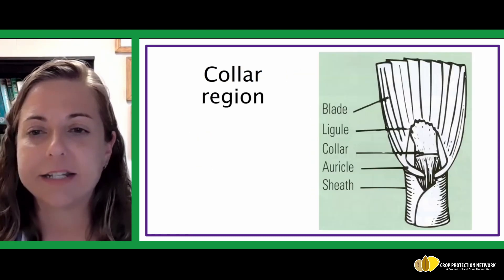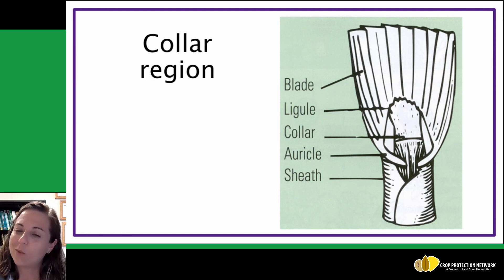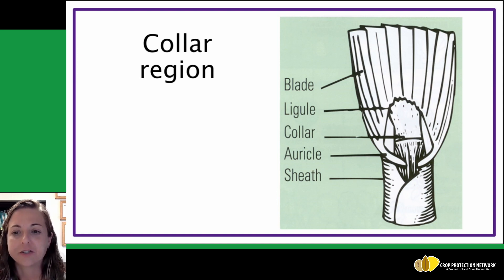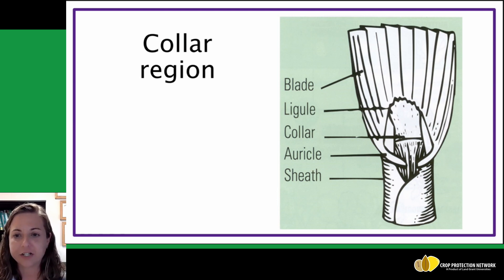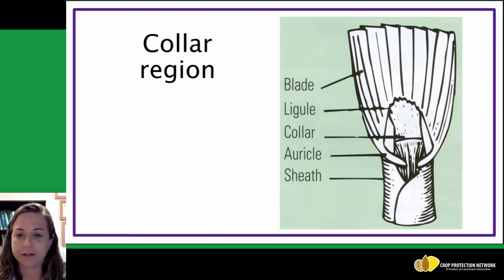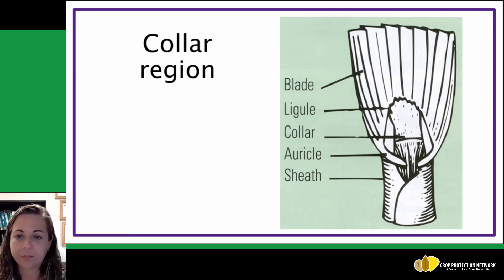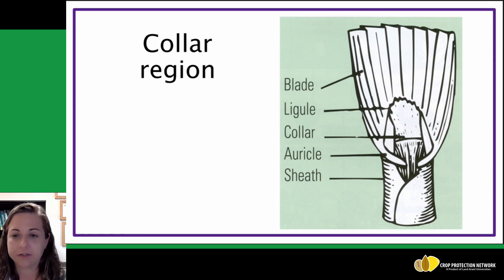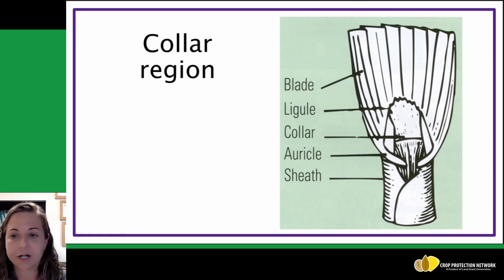Getting down into the specifics of a grass plant, one of the key places to look when identifying a grass is the area we call the collar region. The collar region is where the grass stem and grass leaves come together. Looking at the illustration here, working from the bottom up, you have the leaf sheath, which is the portion of the blade that wraps around the stem. There are various forms of leaf sheaths — they can be overlapping, they can be very close together. We're going to look at some foxtails that have hairs along the margins of that leaf sheath.